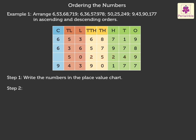Step 2. Identify the smallest number by comparing the number of digits in each number. A number with less digits is smaller than a number with more digits. Hence, the smallest number is 50,25,249.